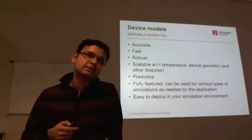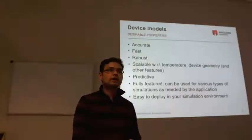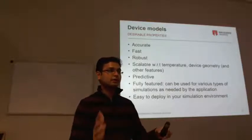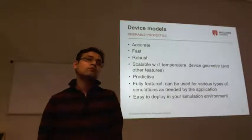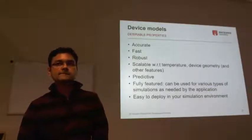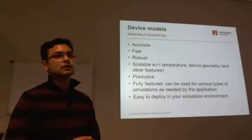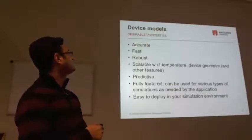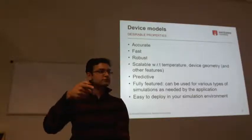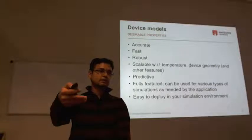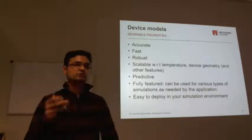From the application side, we want high mobility, high voltage capability, and high current capability. Now let's talk about what is needed from a device model for simulations. First and most critically, models must be accurate - they must closely match the characteristics your fabricated device gives. When you fabricate the device, your model should be very close to its measured characteristics. Accuracy is a big requirement.